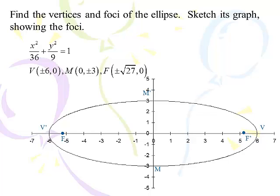The vertices are at (±6, 0). The minor axis endpoints are at (0, ±3). The foci are at (±√27, 0) — √27 is about 5-point-something. Remember: the vertices and foci are both on the major axis, and the foci are always between the vertices.